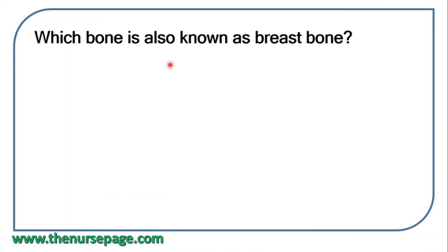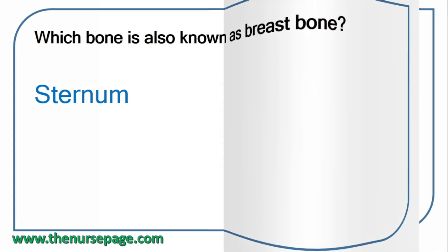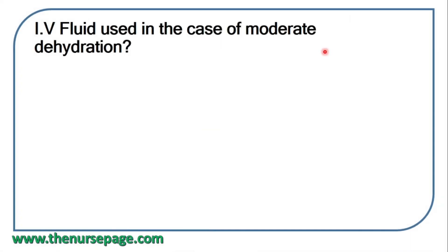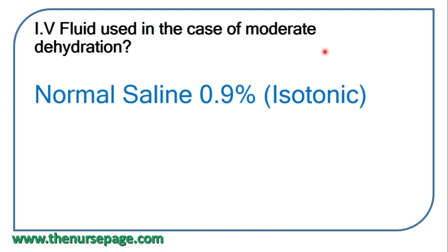Next question: which bone is also known as the breastbone? Correct answer: sternum. Next question: IV fluid used in moderate dehydration. For moderate dehydration we recommend isotonic solutions; from the options, normal saline 0.9% is isotonic so we can use normal saline.